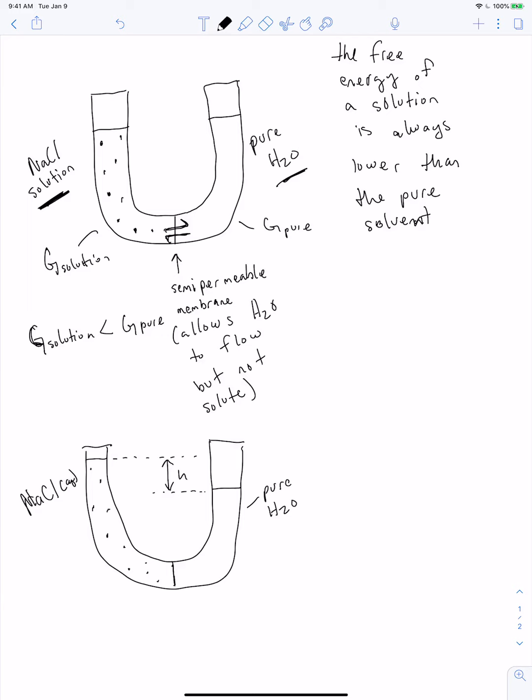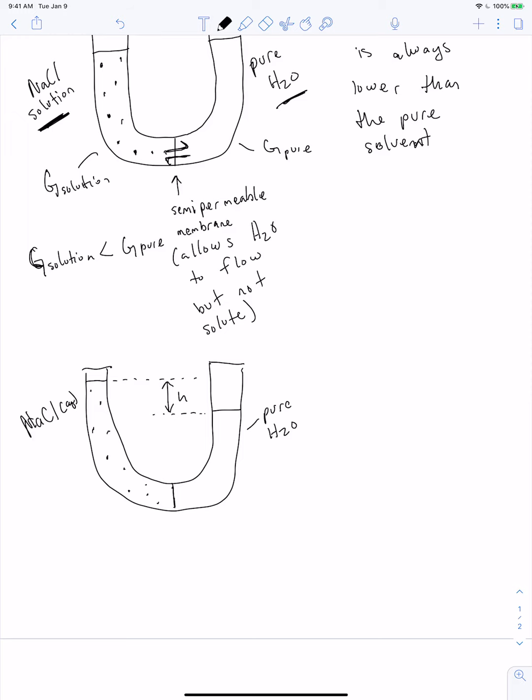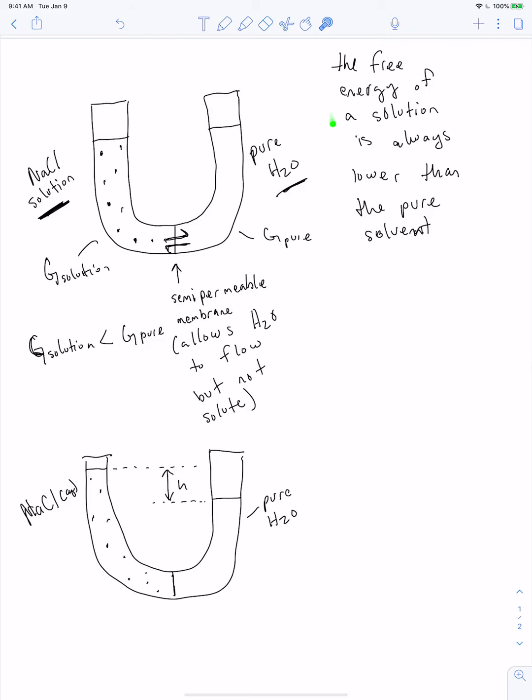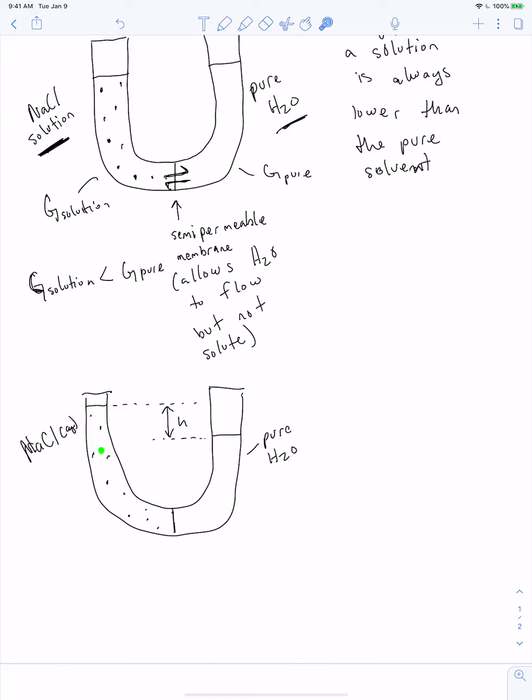So the first question is, why does this happen? The free energy of the solution is lower, and the water moves towards the solution of sodium chloride. And what that does is it increases the free energy of the solution. So as the solution becomes more dilute, its free energy increases. Eventually, it stops when it reaches equilibrium.